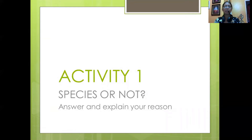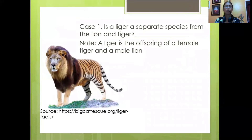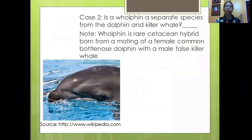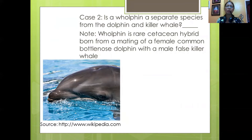For Activity 1, 'Species or Not?', answer and explain your reason. Case 1: Is a liger a separate species from the lion and tiger? Species or not? Note: a liger is the offspring of a female tiger and a male lion. Case 2: Is a wolphin a separate species from the dolphin and a killer whale? Species or not? Note: a wolphin is a rare cetacean hybrid born from a mating of a female common bottlenose dolphin with a male false killer whale.